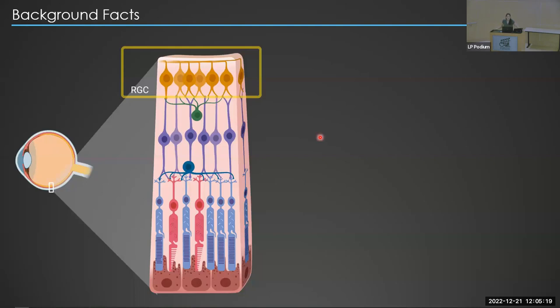In the eye, retinal ganglion cells are the sole output neurons that transmit visual information to the brain through the optic nerve. They're a heterogeneous population of cells that have, over the years, been shown to have different physiological, morphological, and molecular characteristics.